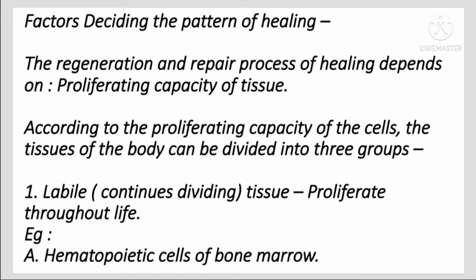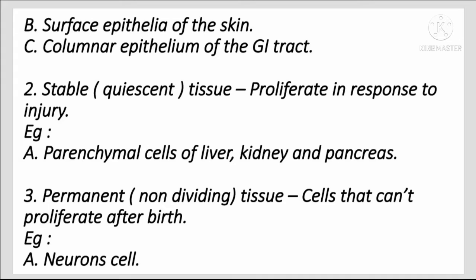According to the proliferating capacity of the cells, the tissues of the body can be divided into three groups. The first one is labile or continuously dividing tissue, which proliferates throughout life. Examples include hematopoietic cells of the bone marrow, surface epithelial of the skin, and columnar epithelial of the gastrointestinal tract.